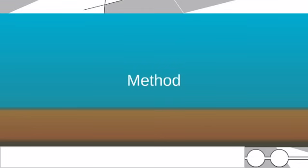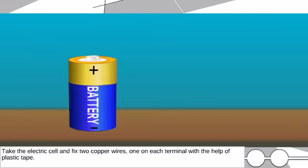Method: Take the electric cell and fix two copper wires, one on each terminal with the help of plastic tape.